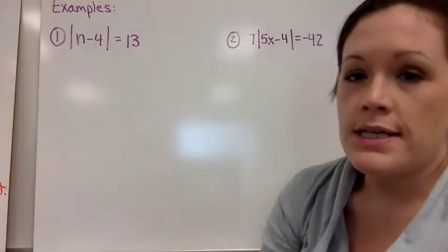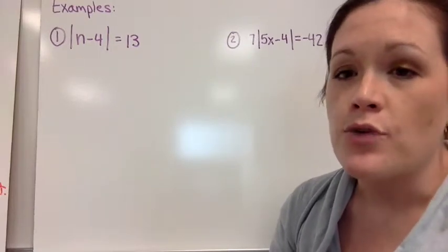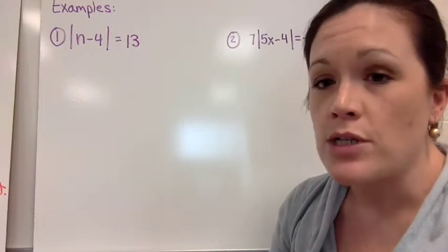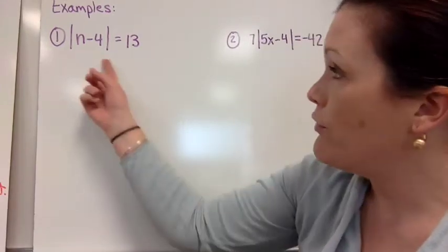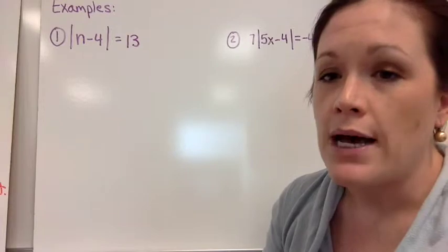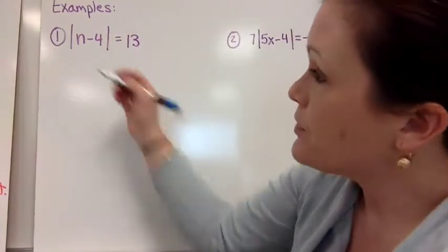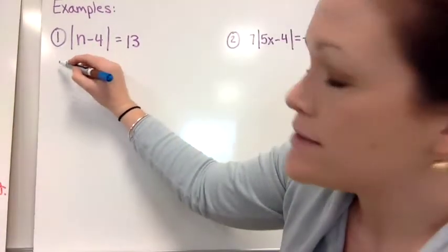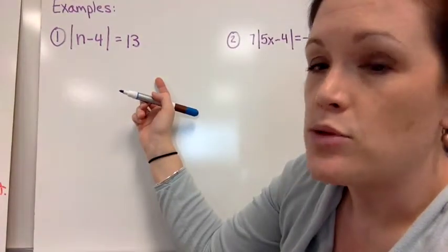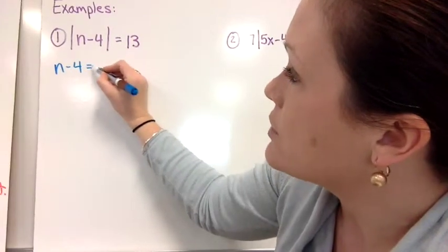For our first example, we have one that's nice and simple and straightforward: the absolute value of n minus four equals 13. I don't need to do any extra work to get the absolute value by itself — that's what we want, isolated on one side. So we set up two equations. The positive one looks just like this without the absolute value symbols: n minus four equals 13.